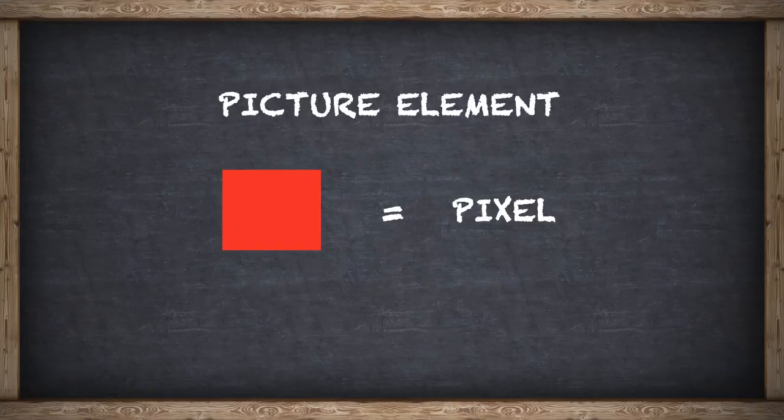Each little dot of an image is called a pixel. This is kind of a portmanteau of the words picture and element. It is the smallest unit we can measure for an image on a computer.